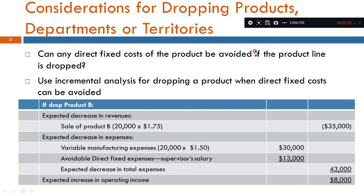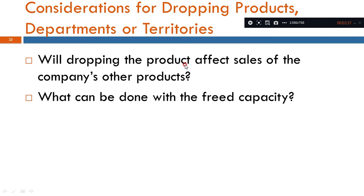If the product line is dropped, you look at whether direct fixed costs can be avoided — directly eliminating those fixed costs is what goes into the incremental analysis. Next, will dropping the product affect sales of the company's other products? This is also a consideration — the effect on other product lines and departments must be factored in. This is a qualitative factor to consider.